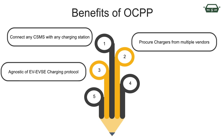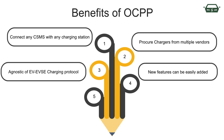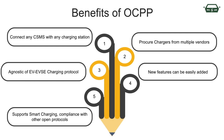OCPP is independent of the charging technique — it works with all charging protocols, be it CCS, GBT, or CHAdeMO. New capabilities and improvements can be added to chargers relatively easily through the openness of the protocol. The latest OCPP versions are also compliant with other standards such as ISO 15118, which defines a protocol for bi-directional energy transfer between EVs and the grid, as well as OpenADR to facilitate grid communication and automated demand response.